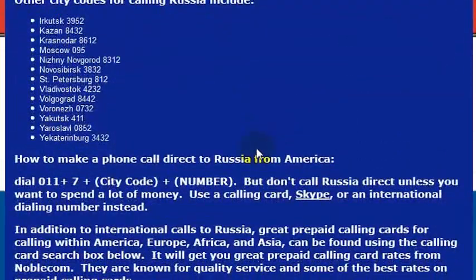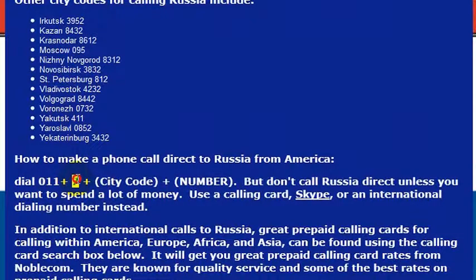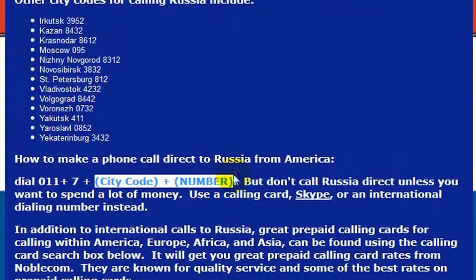A little easier than calling some other countries. If I want to call directly to Russia, all I need to do from the United States is dial 011, which is the international dialing code, then 7, which gets me to the country of Russia, and then I dial the phone number that I'm trying to reach.